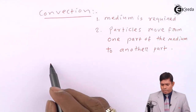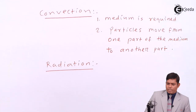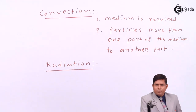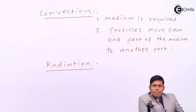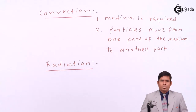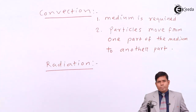The next mode is radiation. Radiation is basically electromagnetic in nature. It is the mode of heat transfer where heat is transferred from one part to another, and that transfer can take place in vacuum also. Radiation involves heat transferred in the form of electromagnetic waves in the infrared region — basically infrared waves.